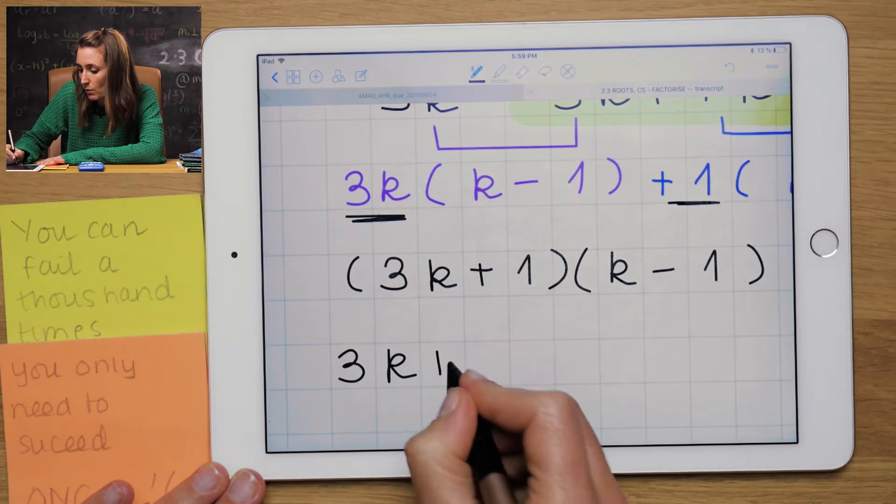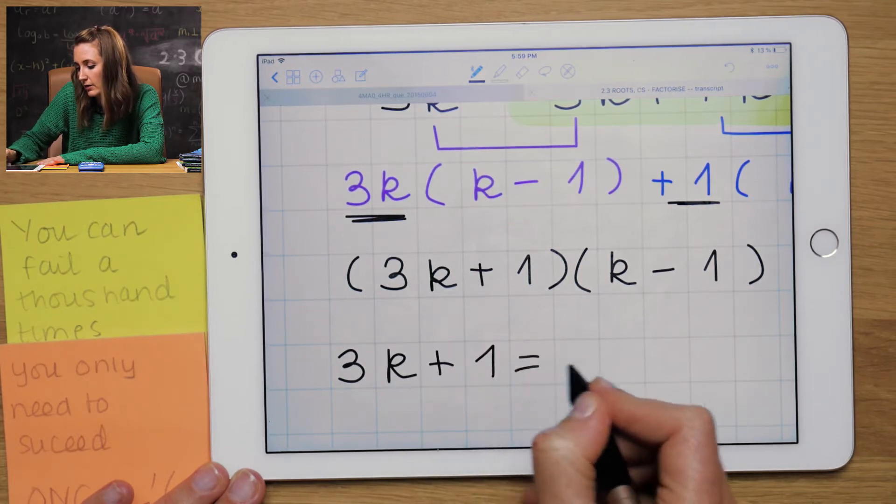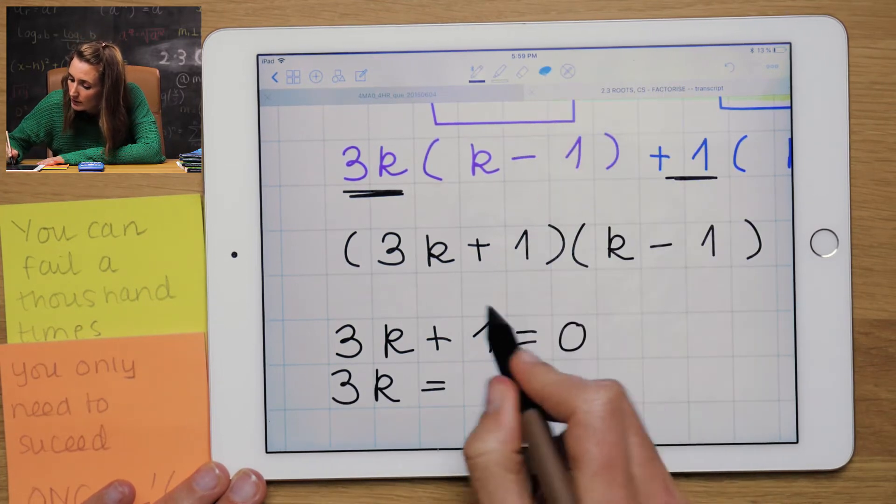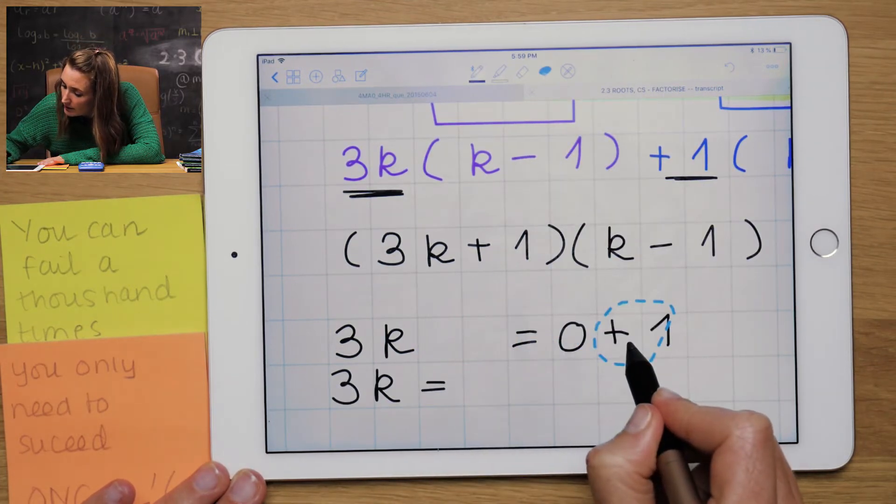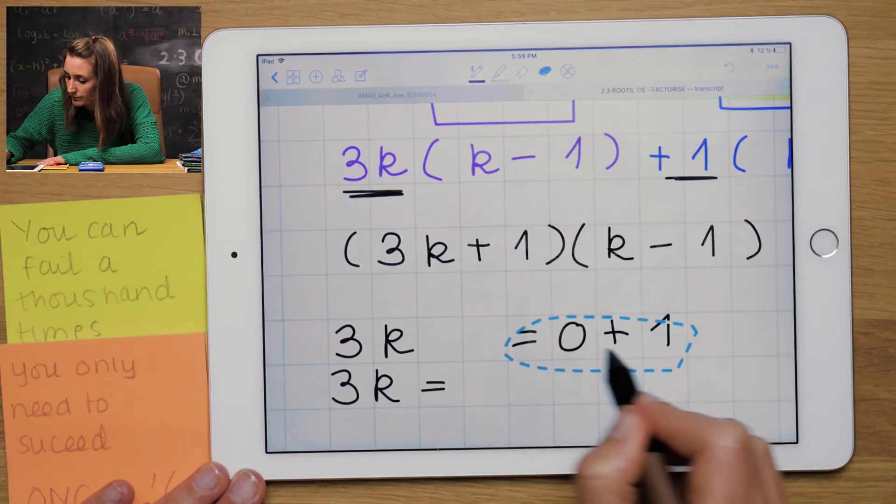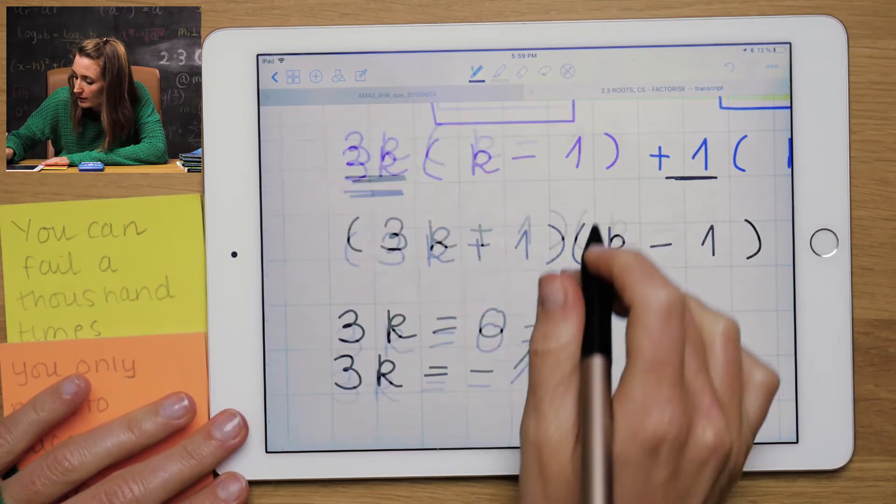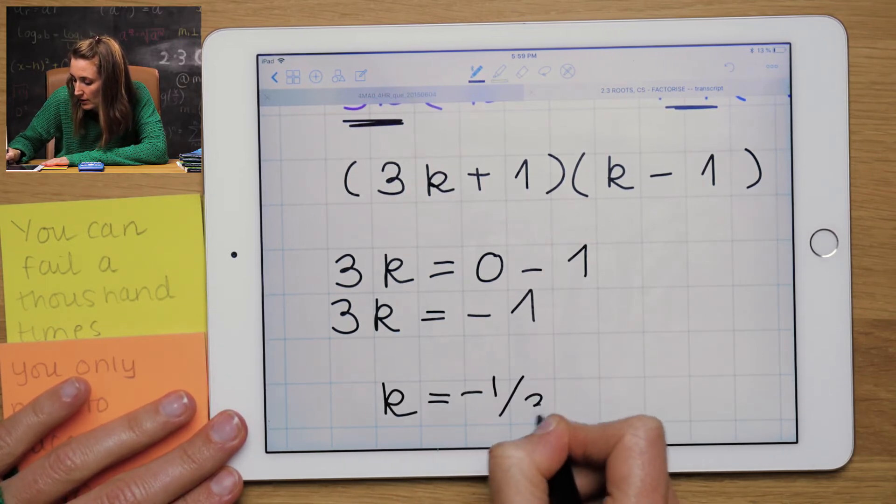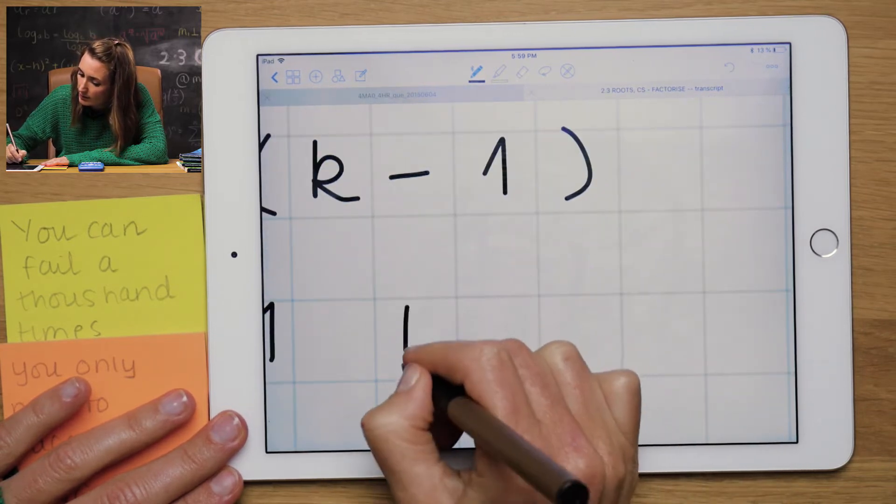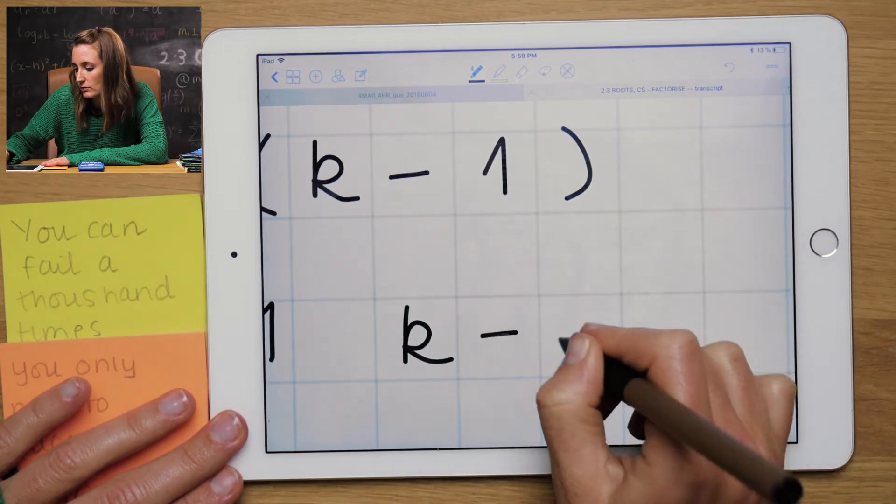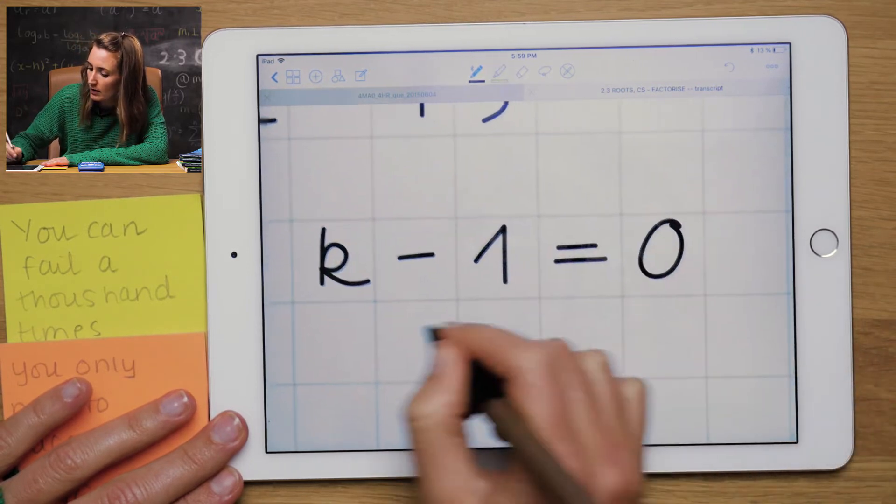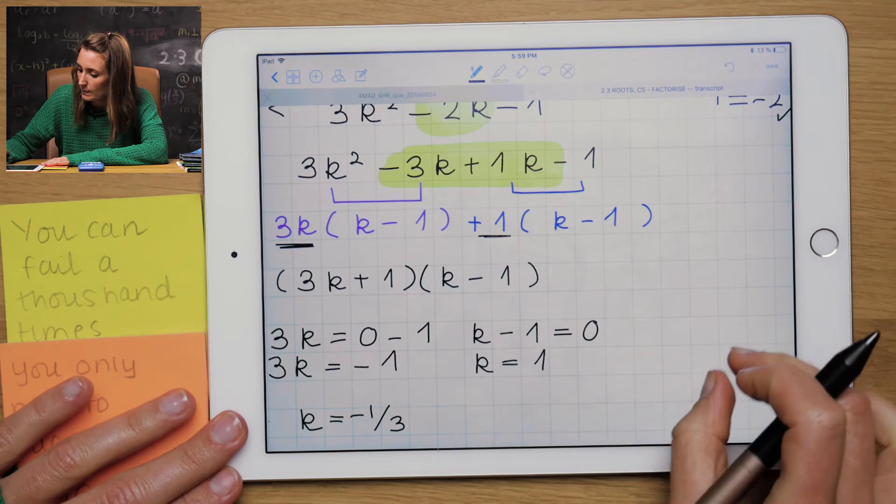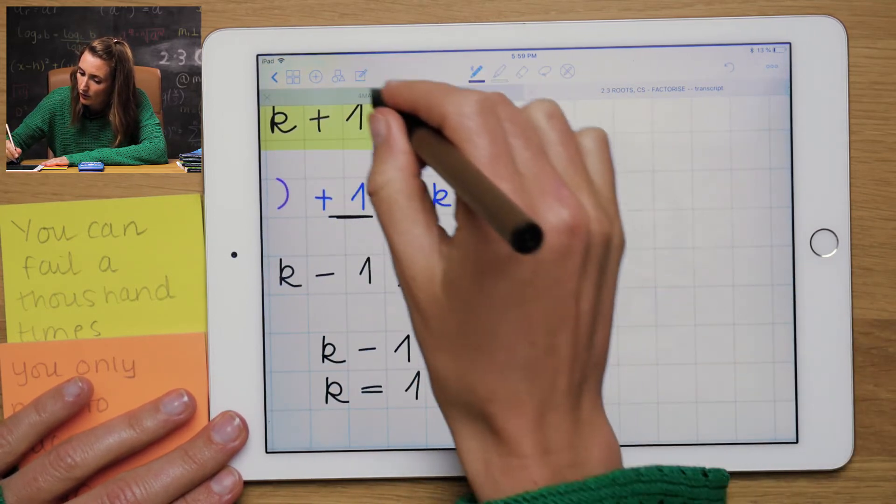Roots. 3k plus 1 equals 0. 3k, that plus 1 needs to go to the other side and it will become minus 1. And we'll have k equals to minus a third. That's going to go on our graph. Other one, a little bit easier. k minus 1 equals to 0. k equals to 1.